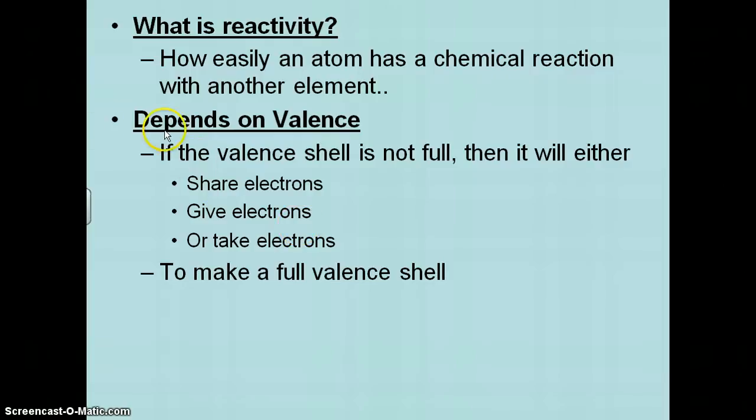So if an atom's valence shell is not full, that means it's unstable. It will react. And it will do it in one of three ways. It will either share electrons with another atom that does not have a full valence shell.